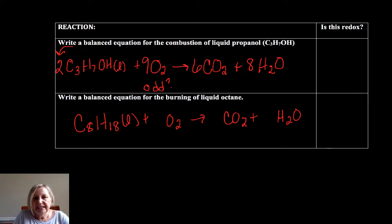Even odd C8, eight carbons, eight carbons, 18 hydrogen. So I would need a nine. So now I've got 16 plus nine or 25 oxygens, but that's O2.